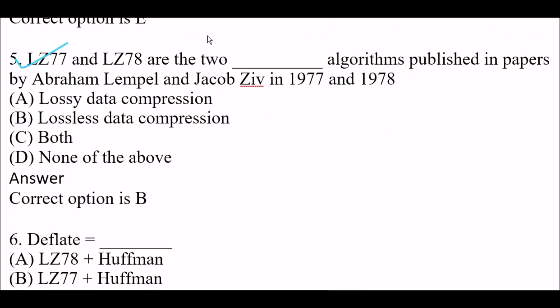Next question: LZ77 and LZ78 are the two blank algorithm published in papers by Abraham Lempel and Jacob Ziv in 1977 and 1978. Option A: Lossy data compression. Option B: Lossless data compression. Option C: Both. Option D: None of the above. The right answer is Option B — lossless data compression. LZ77 and LZ78 are two lossless data compression algorithms published by Abraham Lempel and Jacob Ziv in 1977 and 1978.